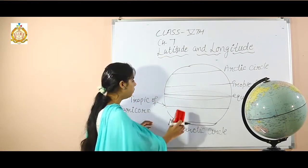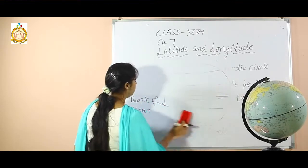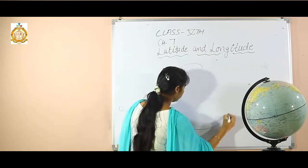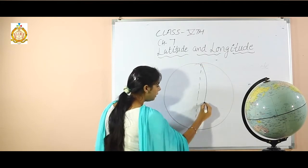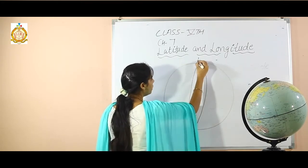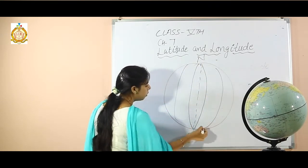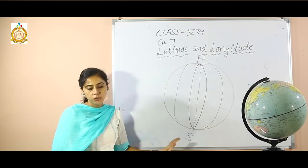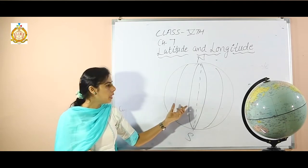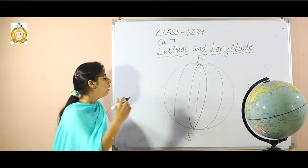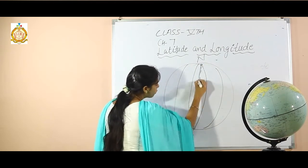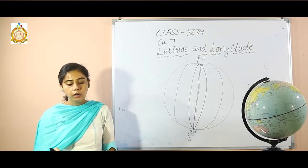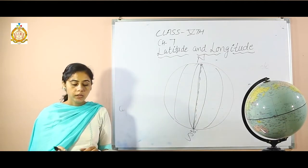The next one is longitude. What is a longitude? All the lines that run from the north pole to the south pole are called lines of longitude. They are numbered in 360 and called meridians. One particular meridian is called the Prime Meridian, and its value is zero degrees.